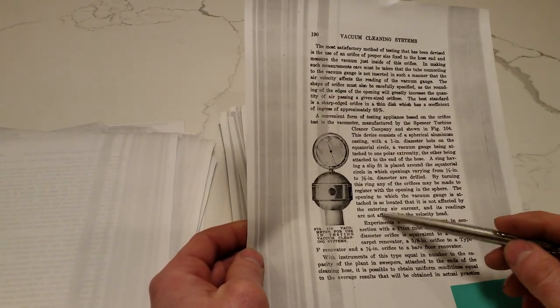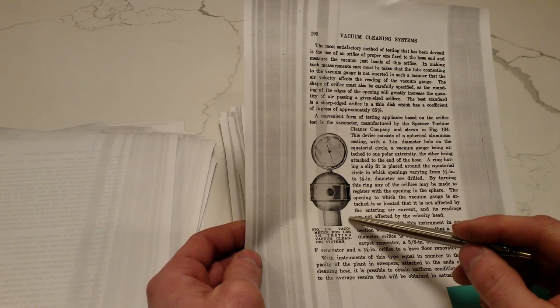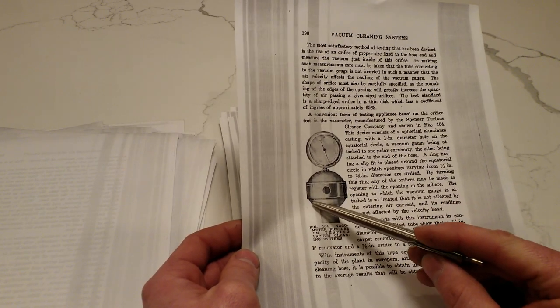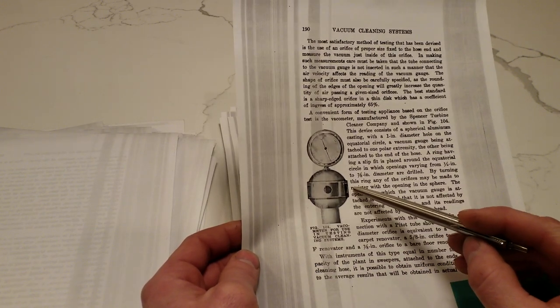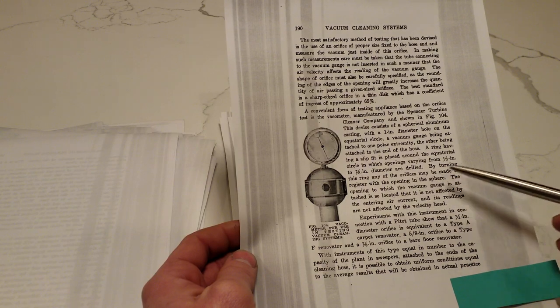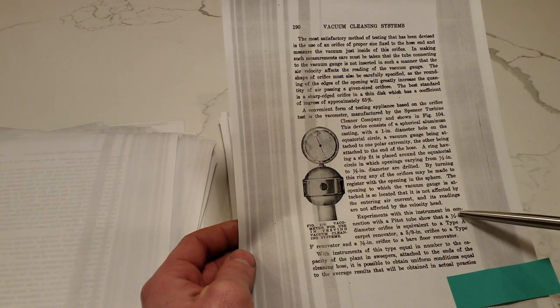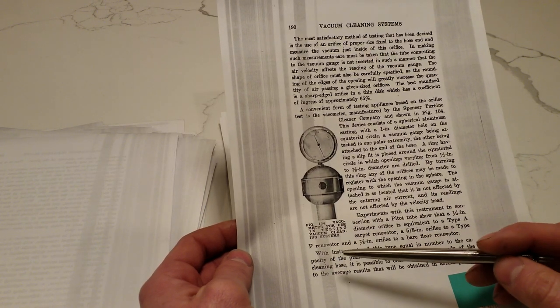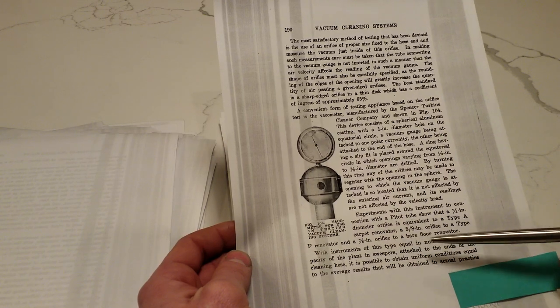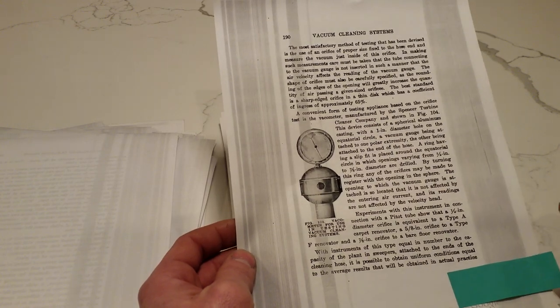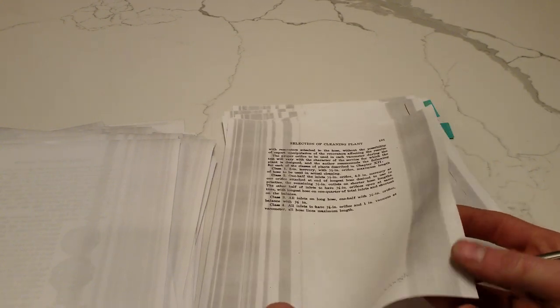Another Spencer invention that I would love to find, but again, I have no hope of finding, is the vac-o-meter. This was a brass globe with a ring around the middle with different holes drilled in it that you could turn. So, you could measure with this vacuum gauge, the vacuum at a one half inch orifice, which is a type A renovator, narrow slot. Or, a five eighth inch orifice, which is a type F renovator. Or, a seven eighth inch orifice, which is a bare floor renovator. So, you can test the performance of your system and different manufacturer systems using that. Spencer no longer makes the vac-o-meter, sadly.